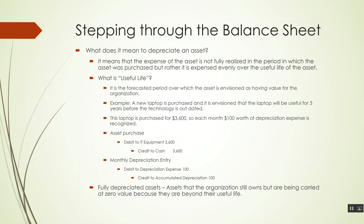A contra asset still appears in your asset section, but its natural balance is going to be a credit as opposed to a debit. When you look at a balance sheet, you'll see the fixed assets balance representing the value of the asset when it was purchased. You'll also see these accumulated depreciation accounts, which will all have credit balances — likely showing up as negative values. To get the current net book value of the asset, you take the net of those two accounts: your IT equipment account minus the accumulated depreciation. In this case, the net book value at the end of the first month would be $3,600 less $100 of accumulated depreciation, leaving us with $3,500.